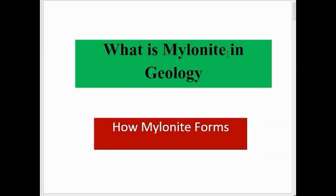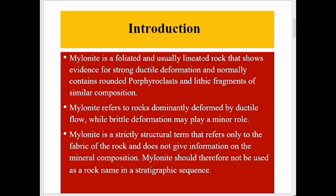Today we talk about what is mylonite in geology and how mylonite forms. Mylonite is a foliated and lineated rock that shows evidence of strong ductile deformation, and normally contains rounded porphyroclasts and lithic fragments of similar composition. Mylonite refers to rock dominantly defined by ductile flow, while brittle deformation may play a minor role. Mylonite is a strictly structural term that refers only to the fabric of the rock and does not give information on mineral composition.